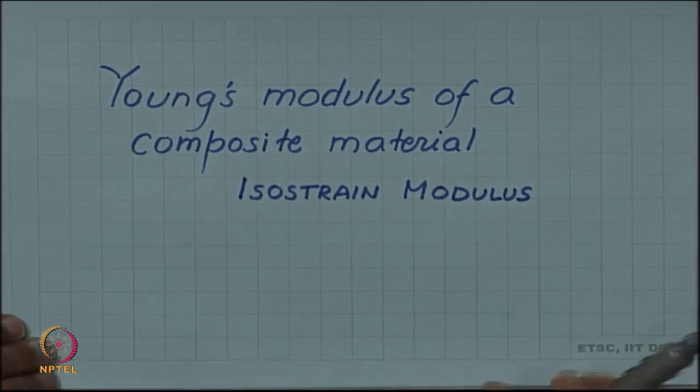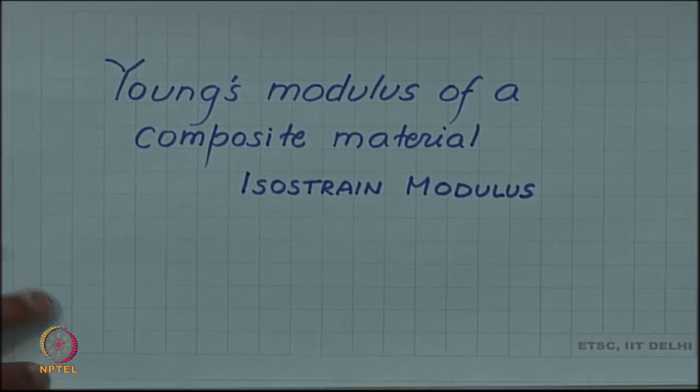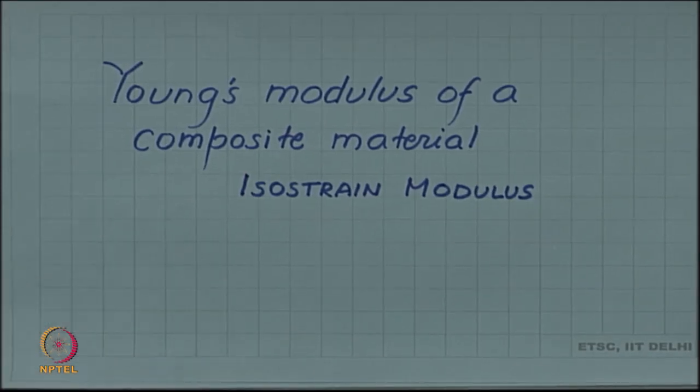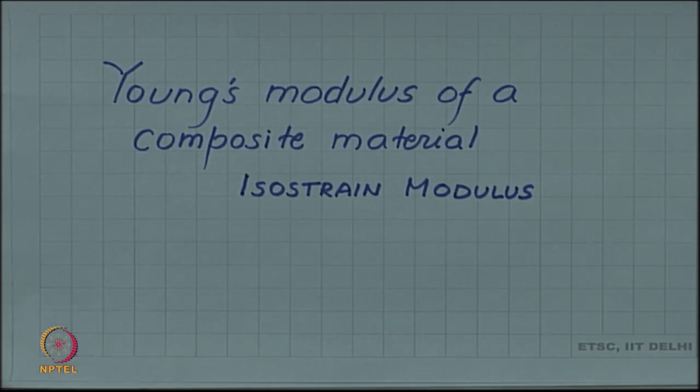As an example of modification of a property of a composite material due to addition of reinforcement, let us consider Young's modulus of a composite material. For example, in a polymer matrix composite such as glass fiber reinforced plastic, GFRP, the polymer itself has very low stiffness, very low Young's modulus, but glass has higher stiffness. So when glass is added, the stiffness of the composite, the Young's modulus of the composite, increases.